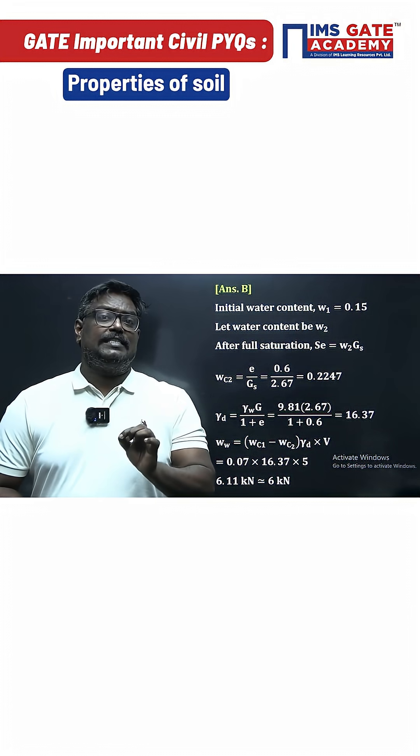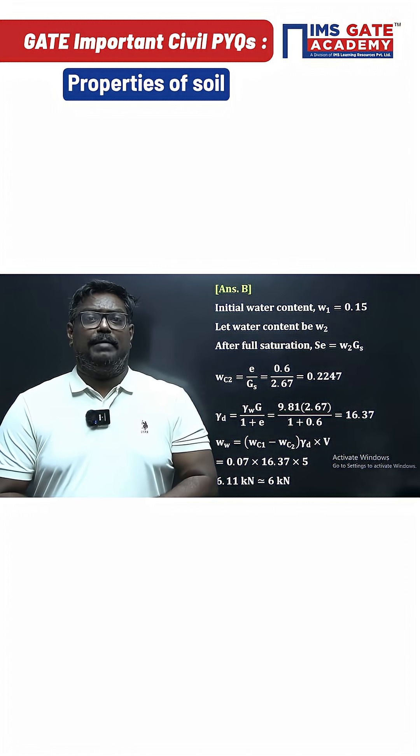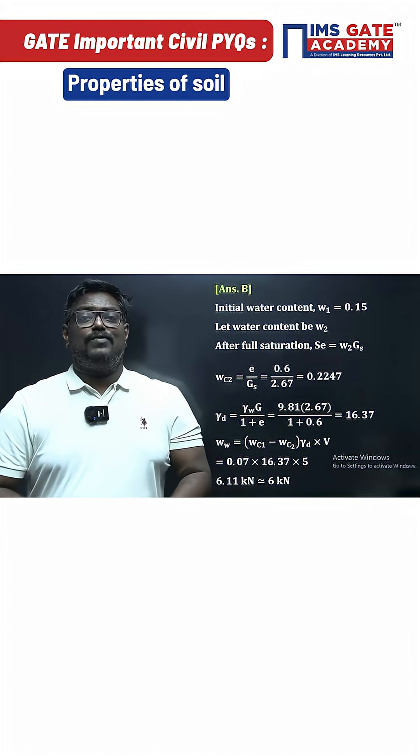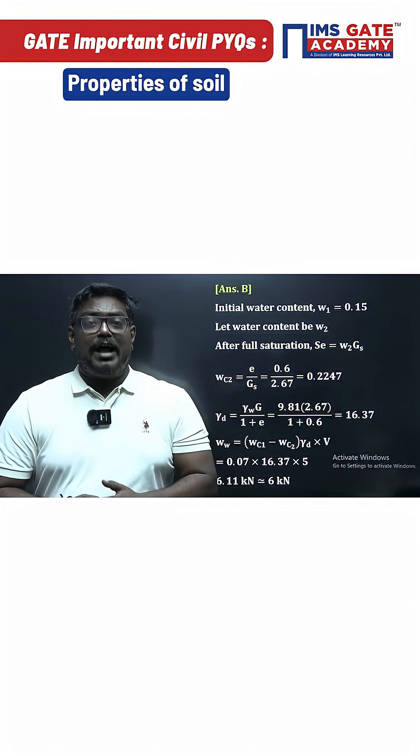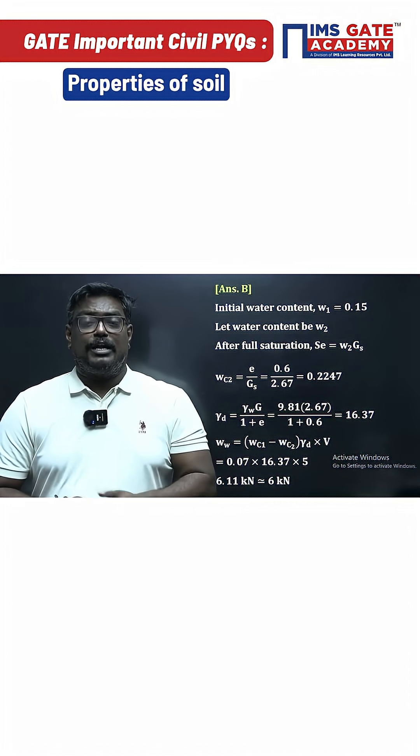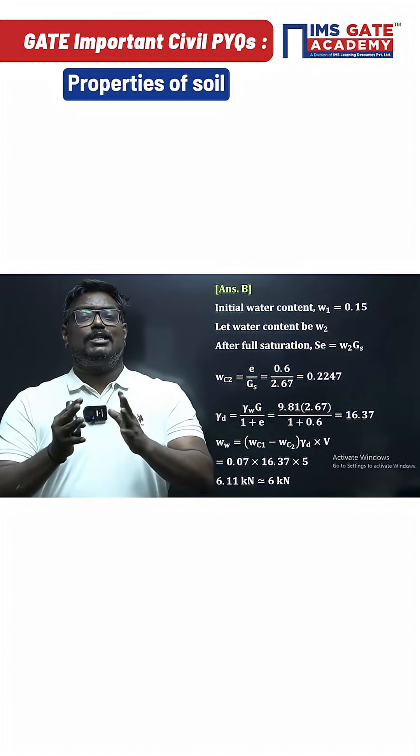The dry density is 16.37 kilonewton per meter cube. On plugging all these values in the formula, you will get a value of 6.11 kilonewton, and you can round off to 6 kilonewton.